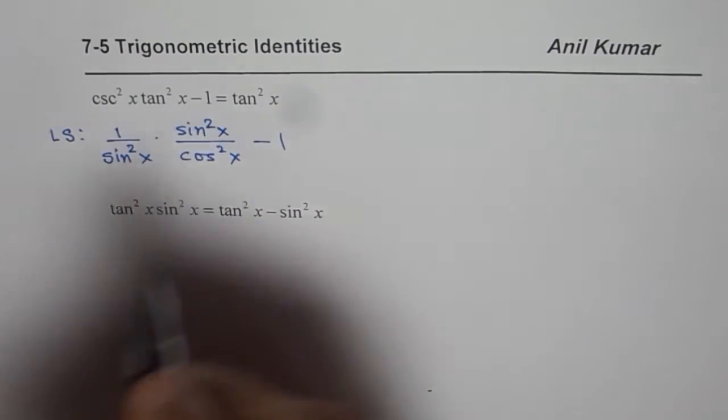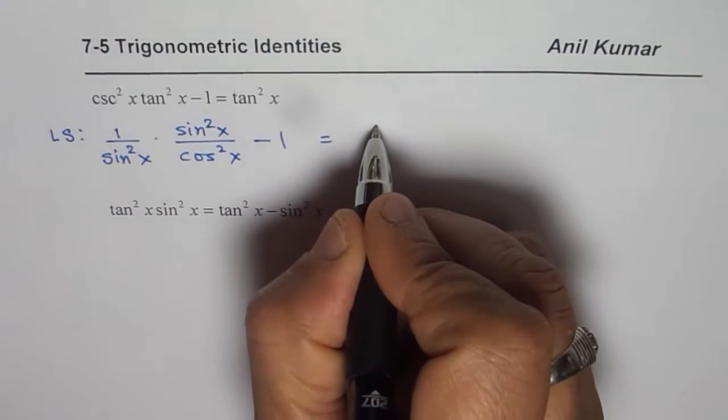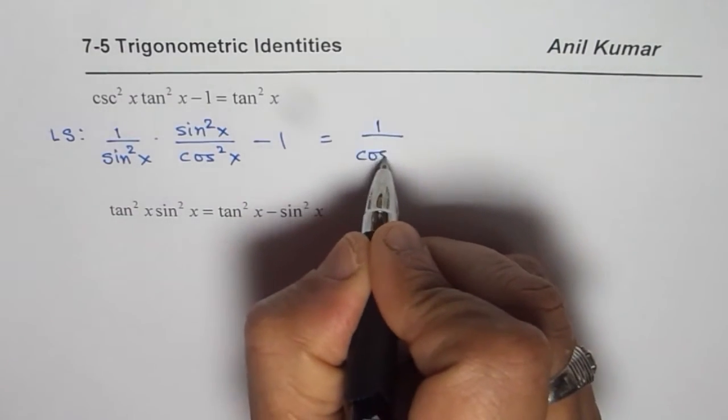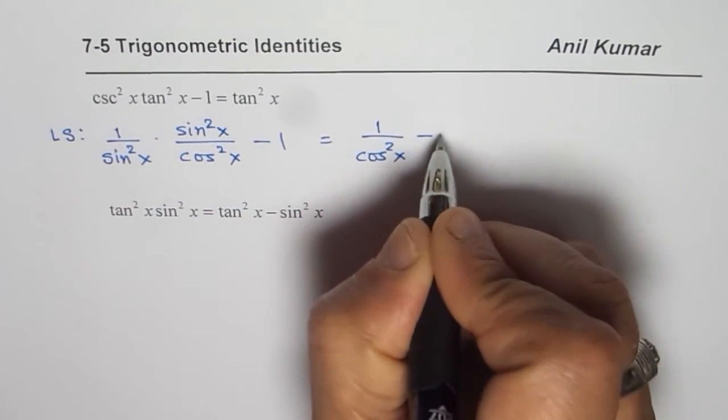Now sin square x, sin square x cancel out. So we have 1 over cos square x minus 1.